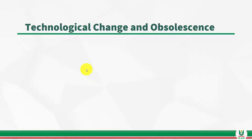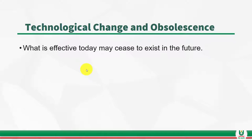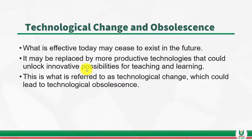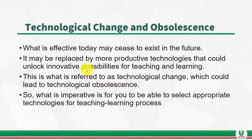This takes us to technological change and obsolescence. What this means is that what is effective today may cease to exist in the future because of the proliferation of technologies. Existing technology may be replaced with more productive technologies. What is important for you as an efficient teacher is that you should be able to select appropriate technologies for teaching and learning, and that is where the framework comes in.